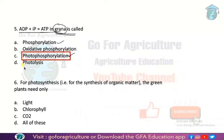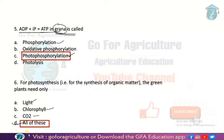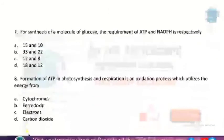Next: for photosynthesis, green plants need — basically, for photosynthesis you need light, chlorophyll (the pigment), and CO2 as the basic ingredient. So the answer is all of the above — option D. If you guessed option D, it's correct.